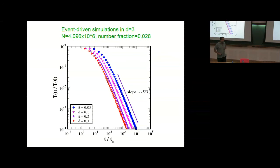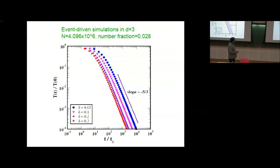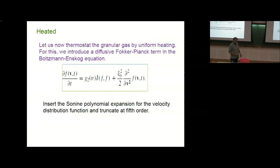The first thing my inelastic kinetic theory tells me is that for the viscoelastic gas, instead of cooling as t raised to the power minus 2, I actually cool as t raised to the power minus five-thirds. Here's a plot of our molecular dynamic simulations — temperature on one axis, real time on the other. These are data sets for different levels of inelasticity, and as you see, they nicely obey the t raised to the power minus five-thirds law predicted by our inelastic kinetic theory for the viscoelastic gas.